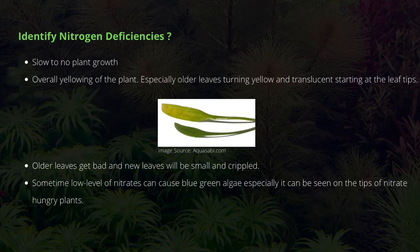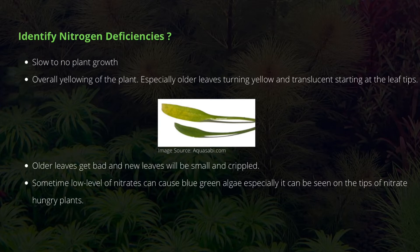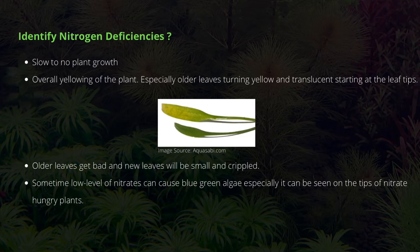Now let's look at how to identify nitrogen deficiencies. If your nitrogen levels are really low — around 0 ppm — with little fish waste or food waste, you will see your plants growing very slowly or not at all. There will be overall yellowing of the plant; older leaves will turn yellow and translucent on the leaf stalk, and the whole leaf can turn translucent. Older leaves will deteriorate, new growth will be small and crippled, and very low nitrate levels can also cause blue-green algae, especially on the tips of nitrate-hungry plants.